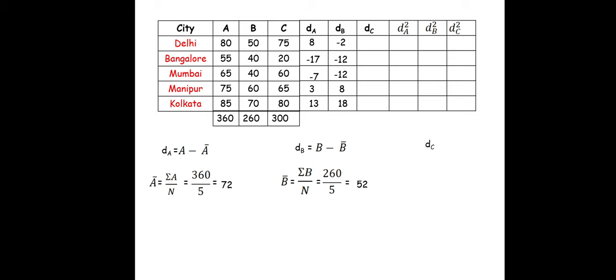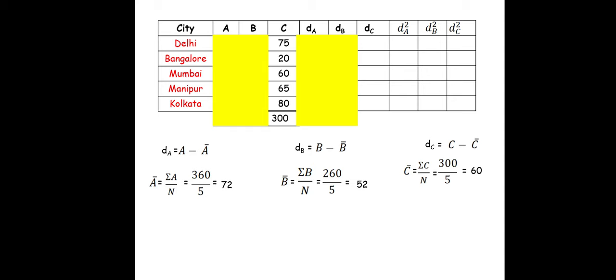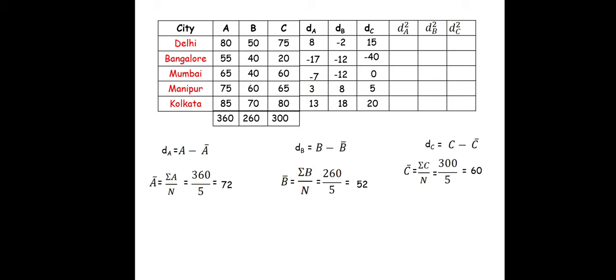Next we calculate dC = C − C̄. C̄ = summation of C / n = 300 / 5 = 60. So: 75 − 60 = 15, 20 − 60 = −40, 60 − 60 = 0, 65 − 60 = 5, 80 − 60 = 20. We have the dC values.